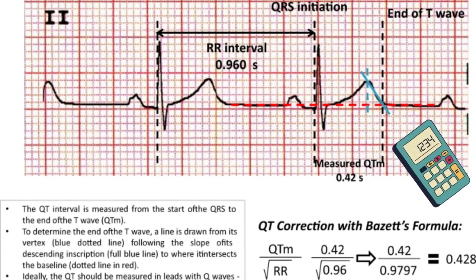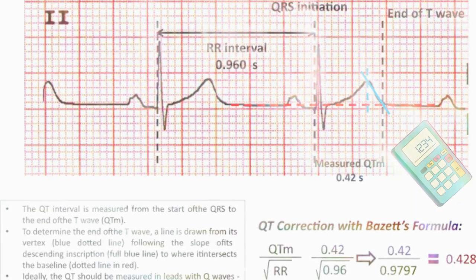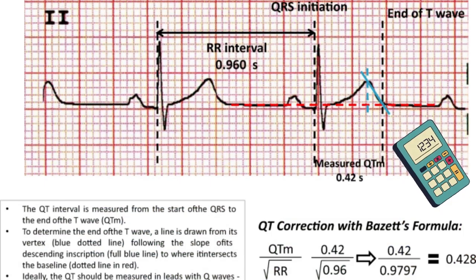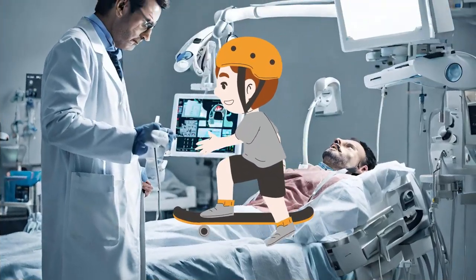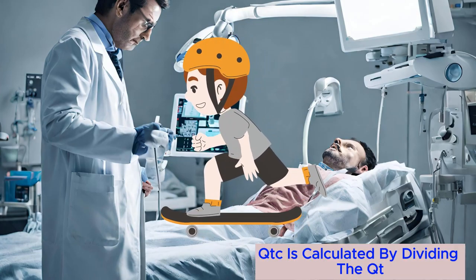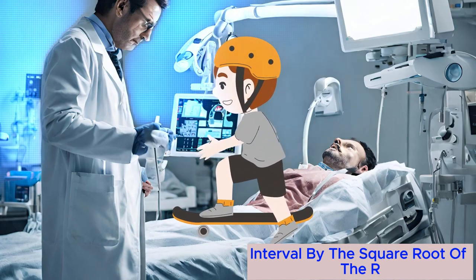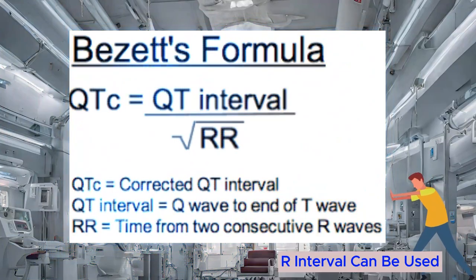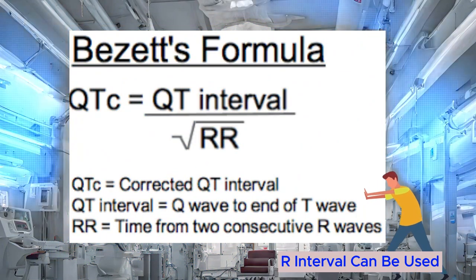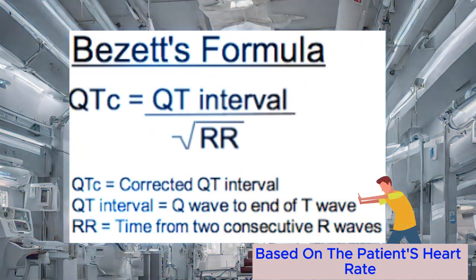Various correction formulas, such as Bazett's formula, can be used based on the patient's heart rate. The corrected QT interval (QTc) is calculated by dividing the QT interval by the square root of the RR interval.